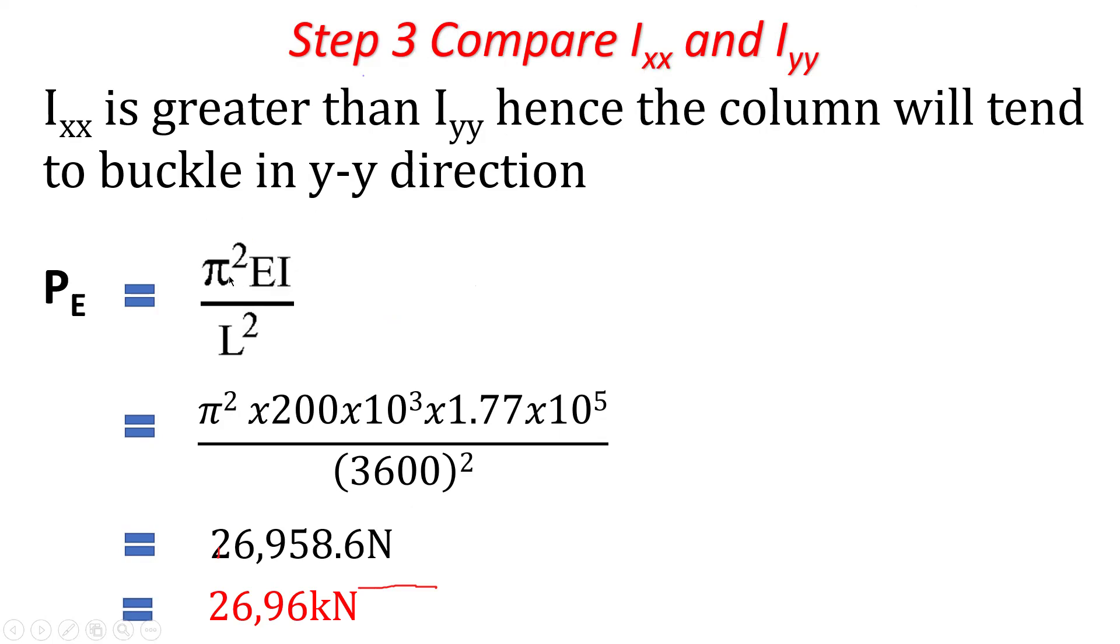So the Euler's formula, or Euler if you are an African like me, you will just pronounce it as Euler. But anyway, the correct pronunciation is Euler. It was a German guy. So Euler's formula is PE equals pi squared divided by L squared multiplied by EI. EI is known as the flexural rigidity. E is the Young's modulus, I of course is what we have been calculating, the second moment of area.